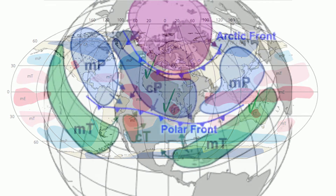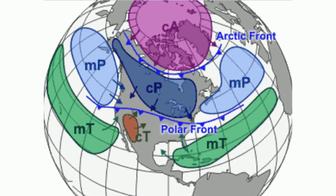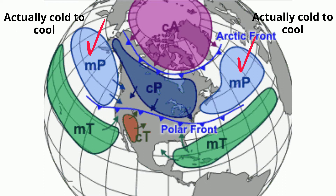A lowercase m, capital P airmass represents a maritime polar airmass. It forms over water — that's maritime — will be moist, and cold because it's polar.